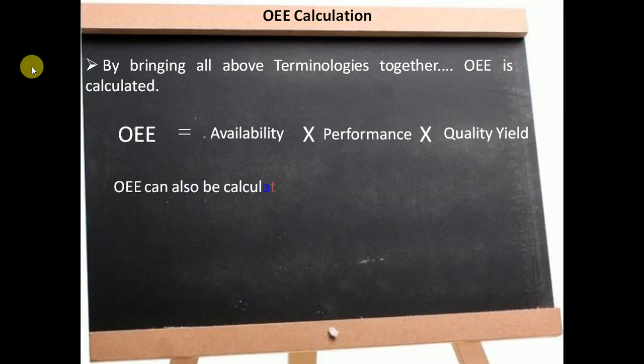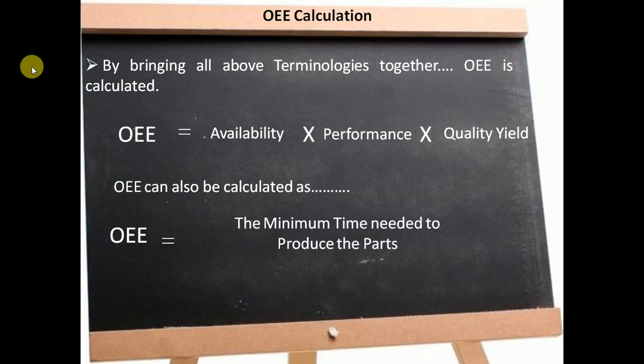Additionally, OEE can also be calculated as the ratio of the minimum time needed to produce the parts divided by the actual time needed to produce the parts.